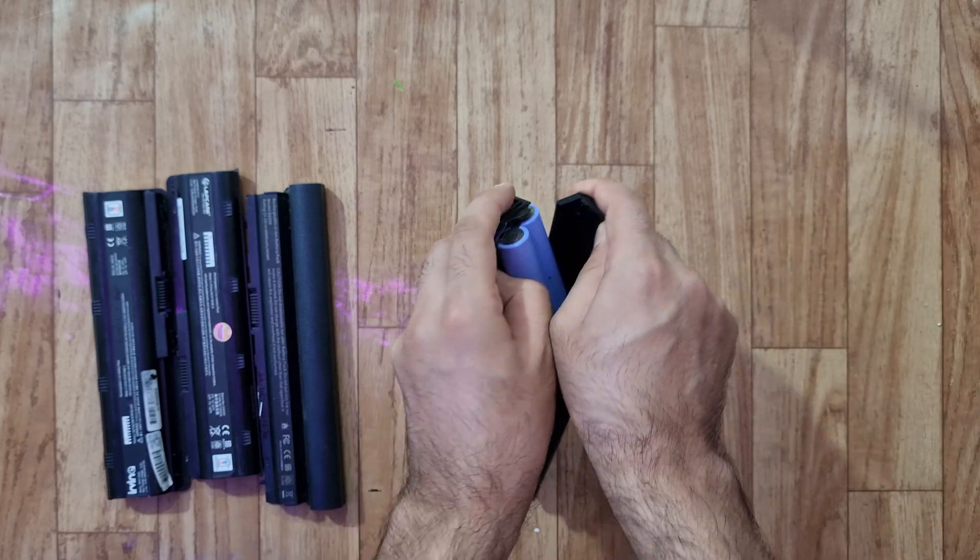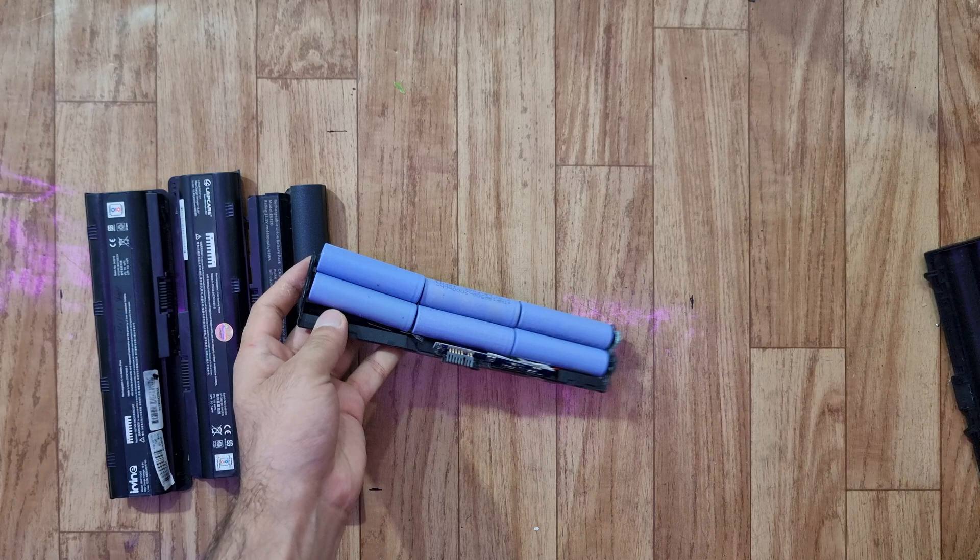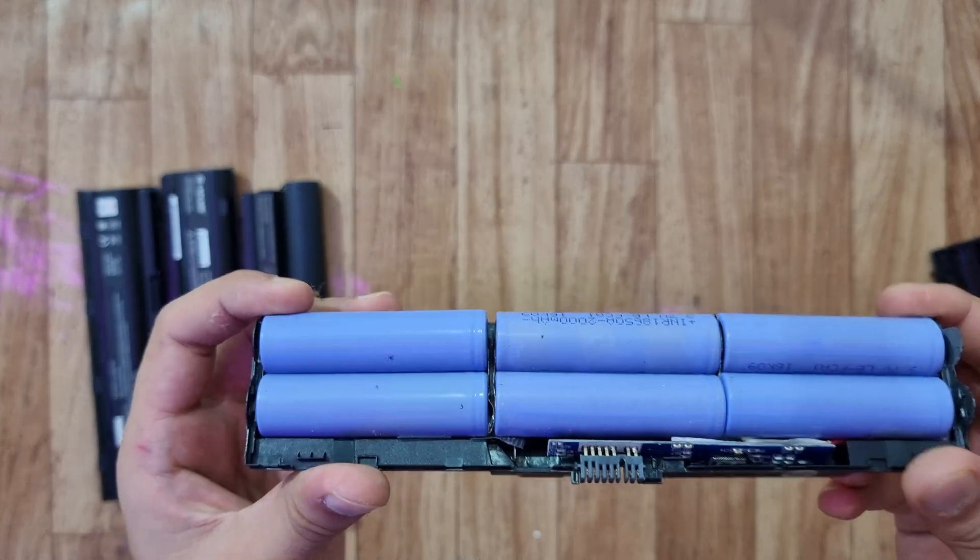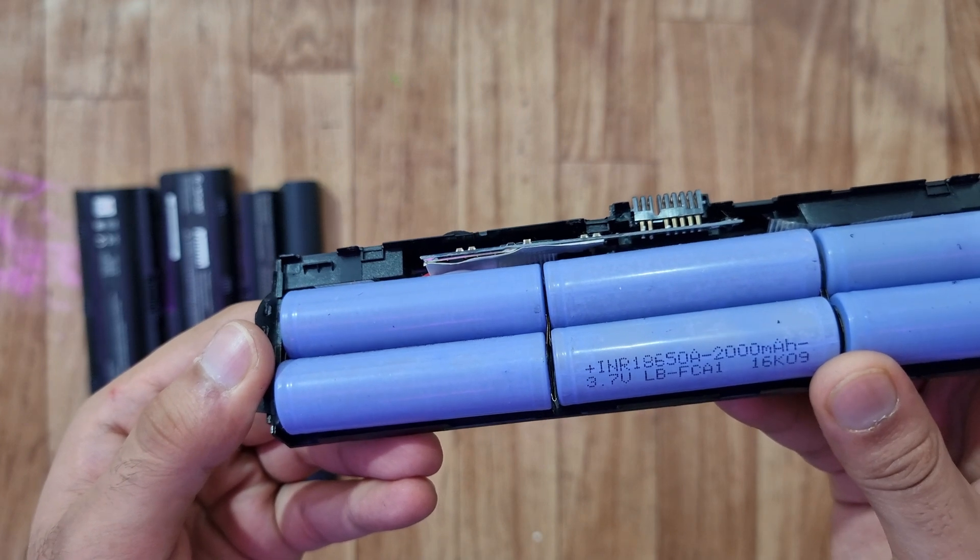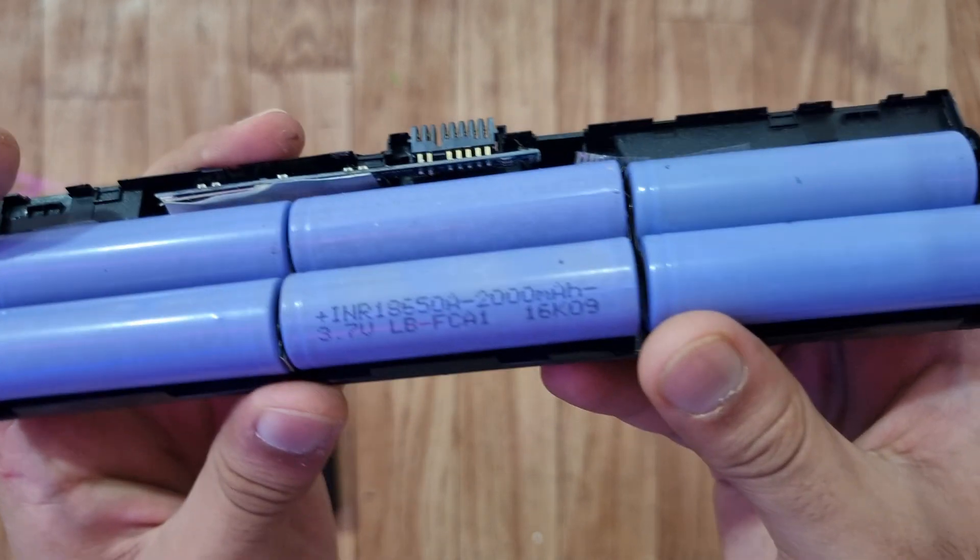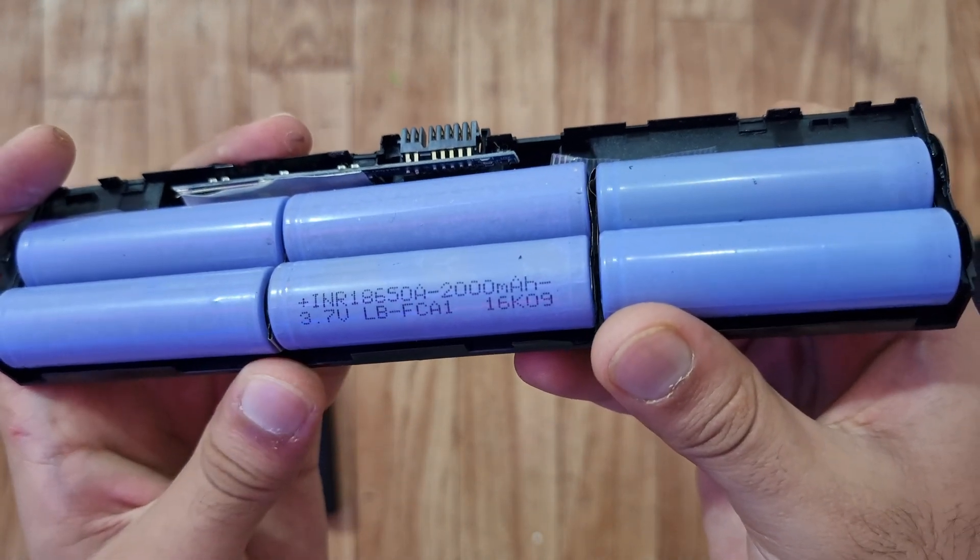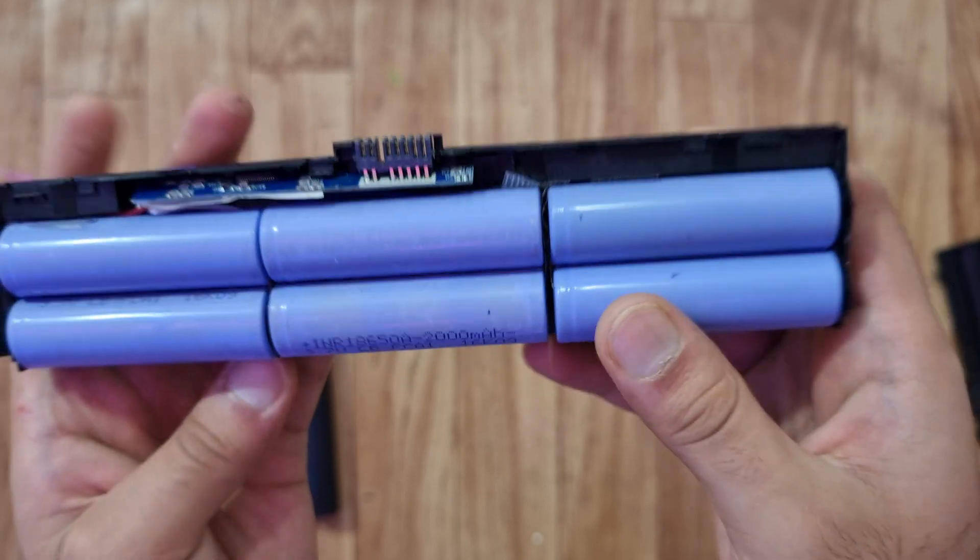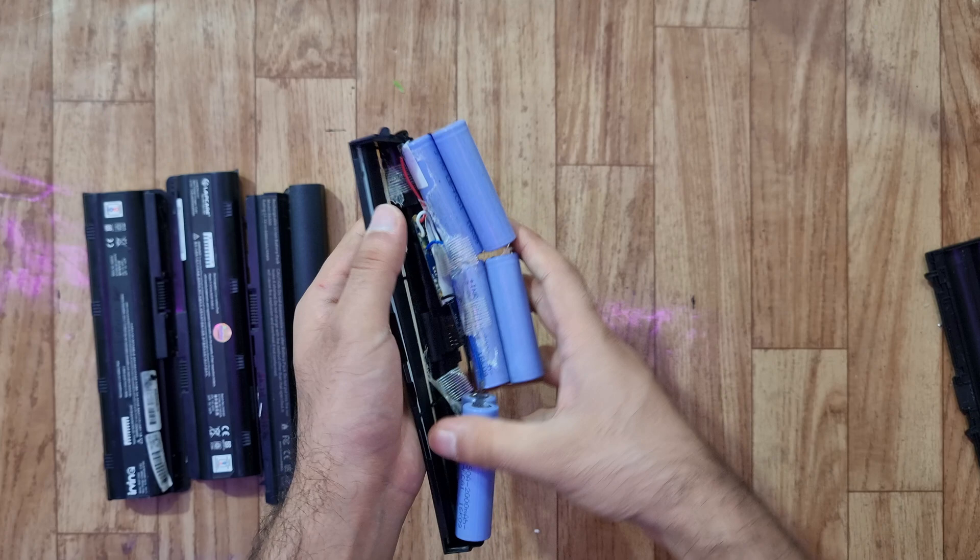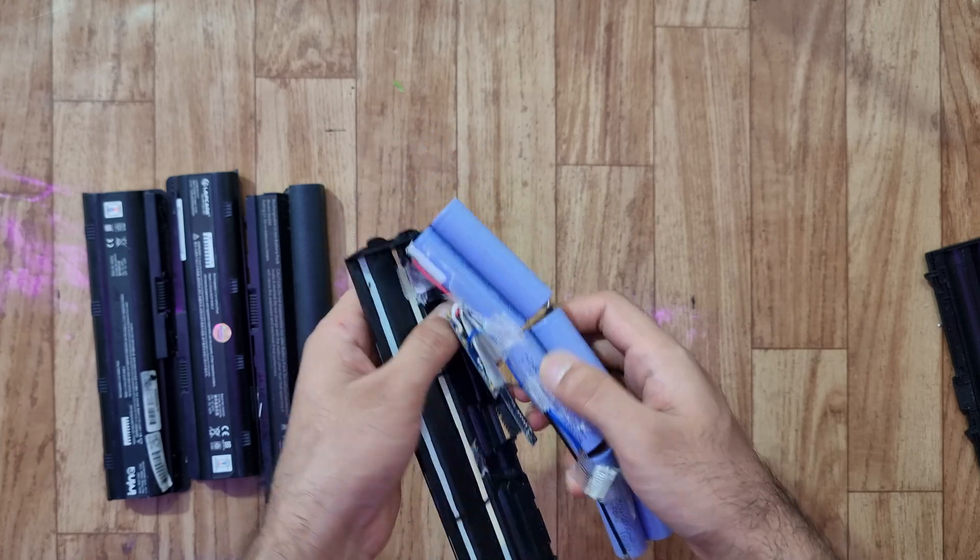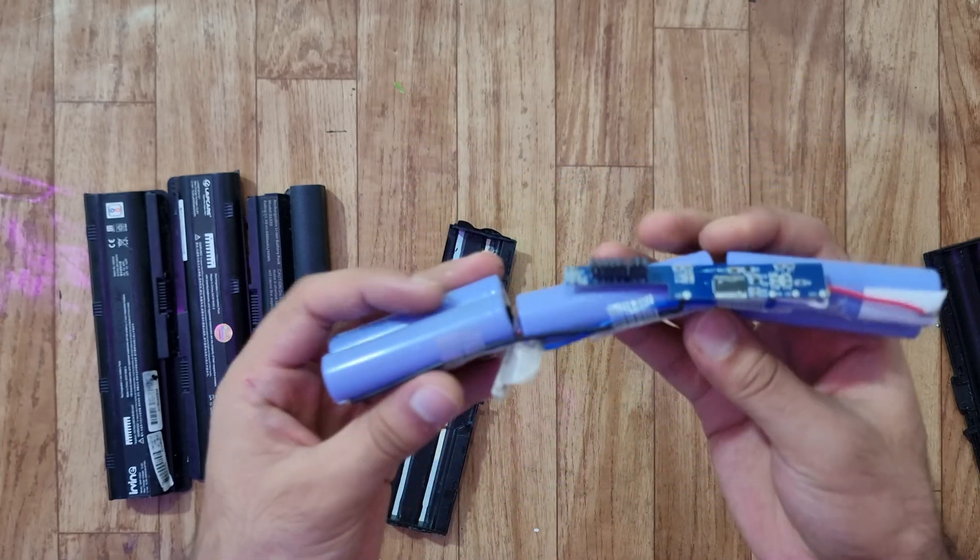As you can see, we have six lithium-ion cells, each of them is 2000 mAh. Now let's remove this remaining plastic piece. So that's one battery done.